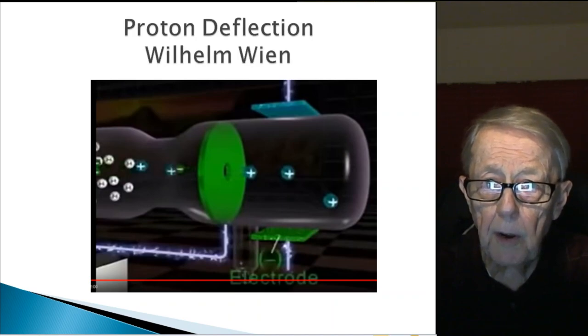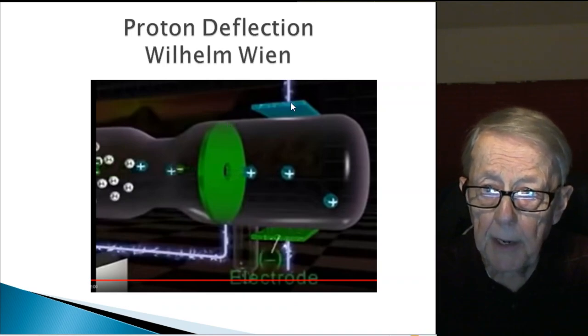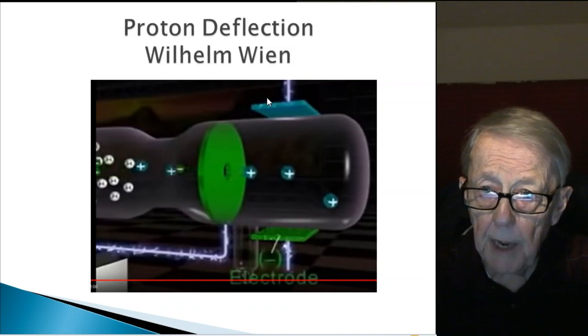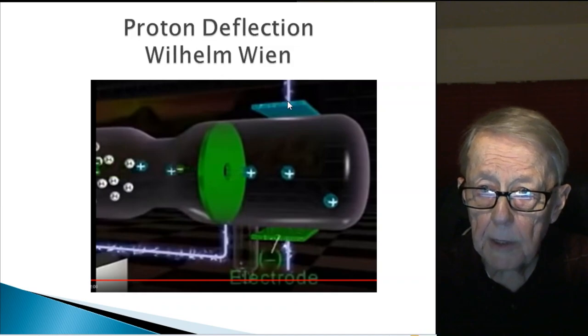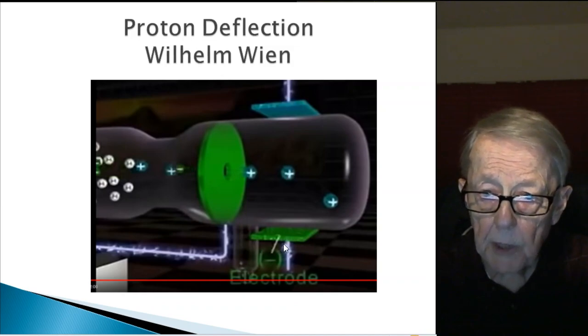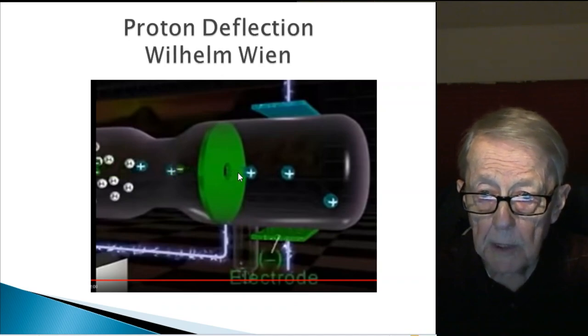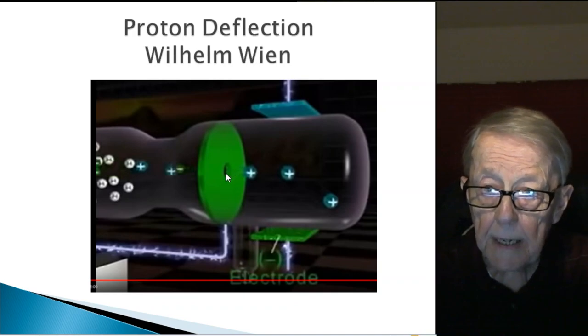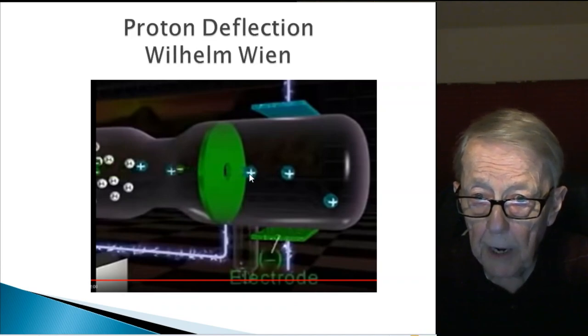Okay, and so Wilhelm Wien, some years later, extended this and added a plate with a positive charge on top and a negative charge on the bottom. He showed that these protons, positively charged protons, bent. He did something different. He only had one canal, and therefore could only have one stream.